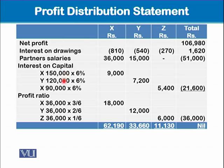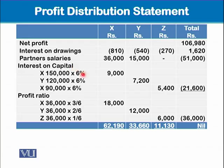Since different partners have contributed different amounts of capital to the business, interest on capital will be the basis for distributing a further 21,600 of profit. This is how we work out each partner's individual share based on their interest on capital.